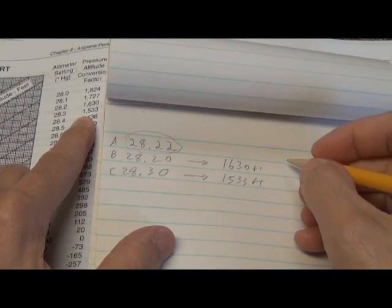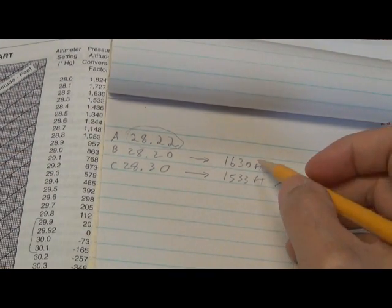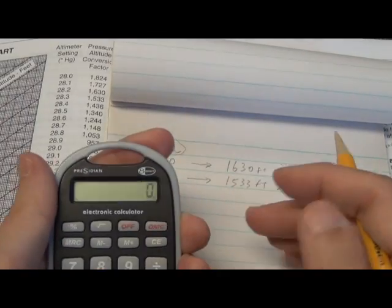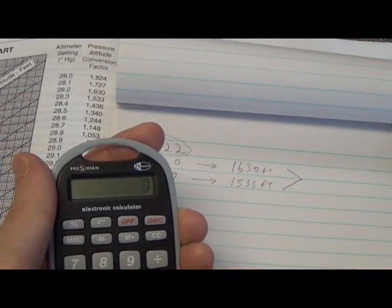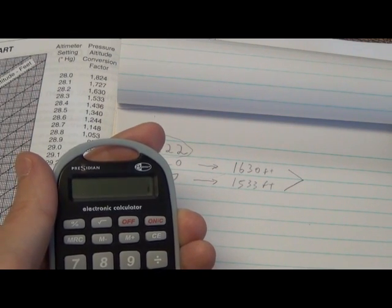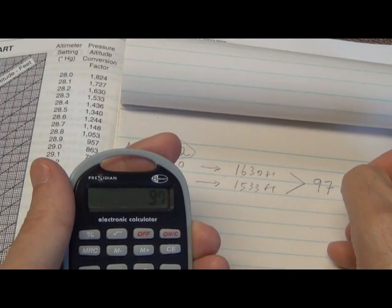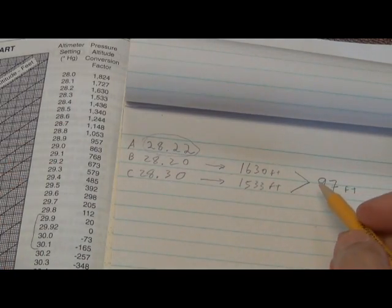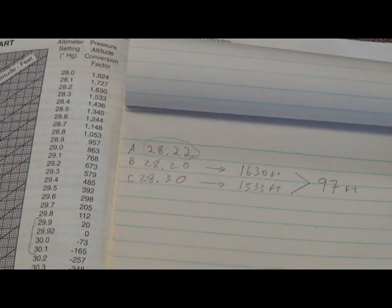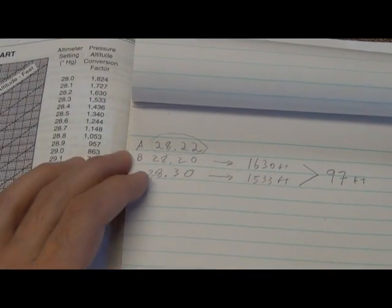The next thing we do, and this stuff you just memorize, is you want to find the difference between these two numbers and how do you do that? Just subtract one from the other. So in this case, it's 1,630 minus 1,533 gives you the answer of 97 feet. So there's a 97-foot difference between these two. Just keep that up on the paper, don't worry about it for now.